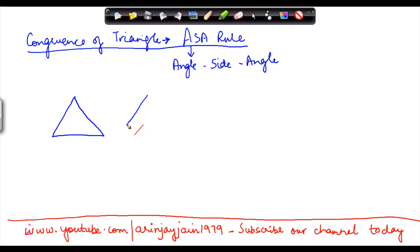The rule says that if in two triangles, let's say triangle ABC and triangle LMN...